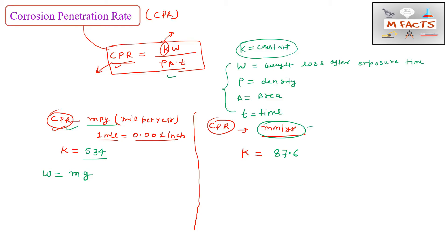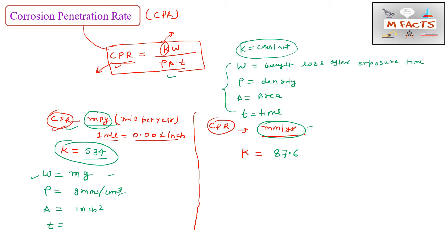For the other variables: W must be in milligrams (mg), ρ (density) must be in grams per centimeter cubed (g/cm³), and area A must be in inches squared when calculating in mils per year. Time t must be in hours. We cannot change these units because the k value is dependent on them.